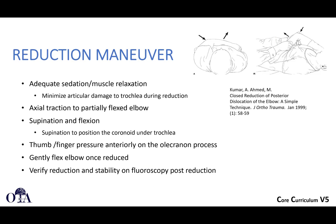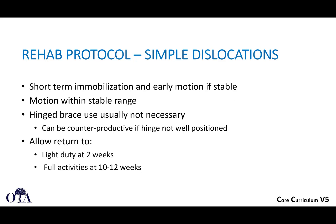For reduction technique: ensure adequate sedation and muscle relaxation to minimize articular damage to the trochlea — avoid aggressive or traumatic reduction. Apply axial traction to a partially flexed elbow, sometimes with supination, then flexion. Use thumbs to push the olecranon distally and anteriorly while fingers are placed anteriorly on the elbow, gently flex to achieve reduction, then confirm with imaging.